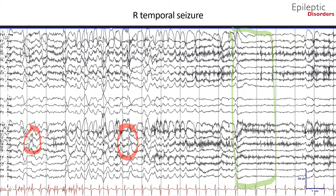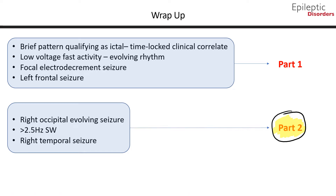Clinically, the seizure was representative of a typical temporal lobe seizure manifestation, with the patient initially experiencing an aura — a rising sensation — followed by oral lip smacking and chewing movements, oral automatisms, and decreased responsiveness throughout the event. There was postictal fatigue and ictal tachycardia with the heart rate reaching up to 160 beats per minute. To wrap up, in part two of this module we discussed a right occipital evolving seizure, a seizure with greater than 2.5 Hz spike wave activity, and a right temporal seizure.